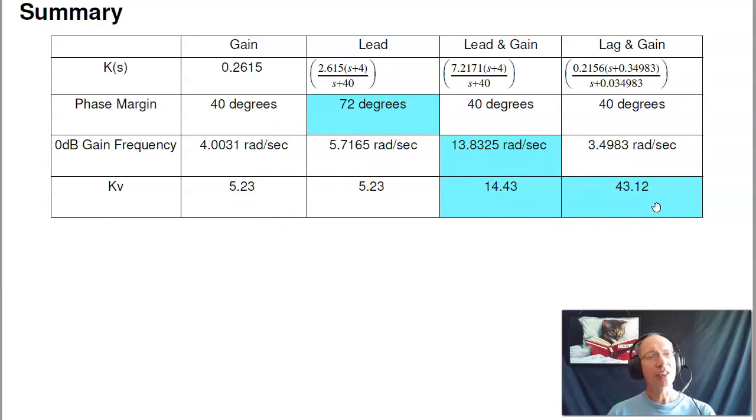And kind of notice it's not exactly the same three dB gain frequency. This does add a little bit of phase lag, which is bad. And to compensate, I have to back up on the gain, which reduces the corner frequency slightly. But I do get a higher error constant, better tracking.